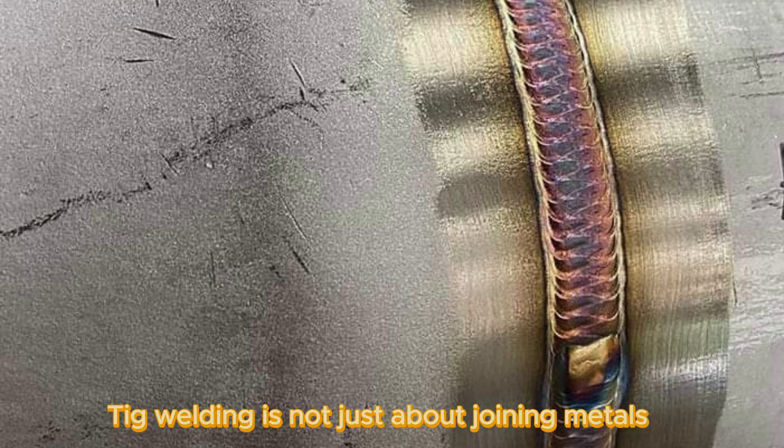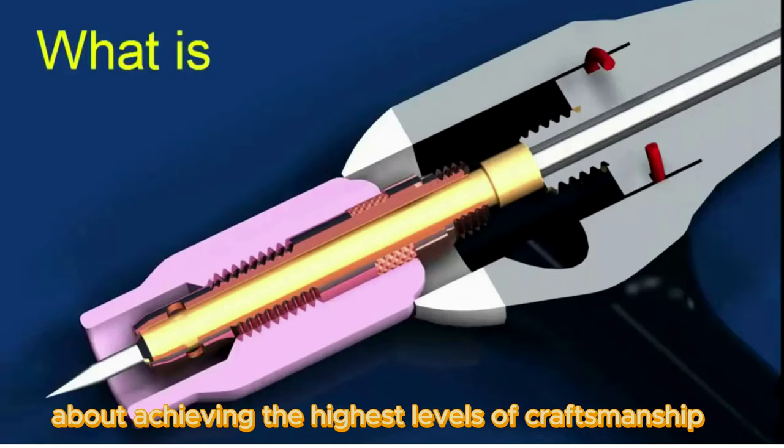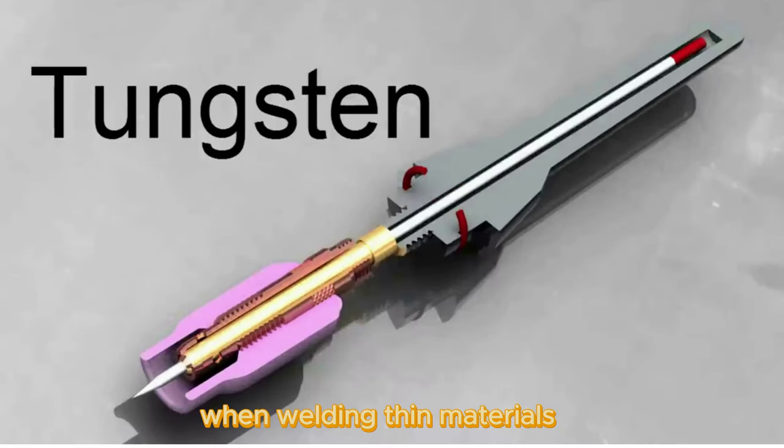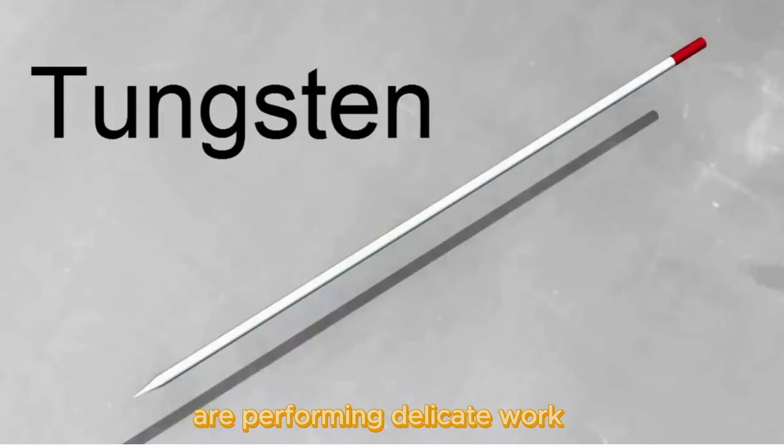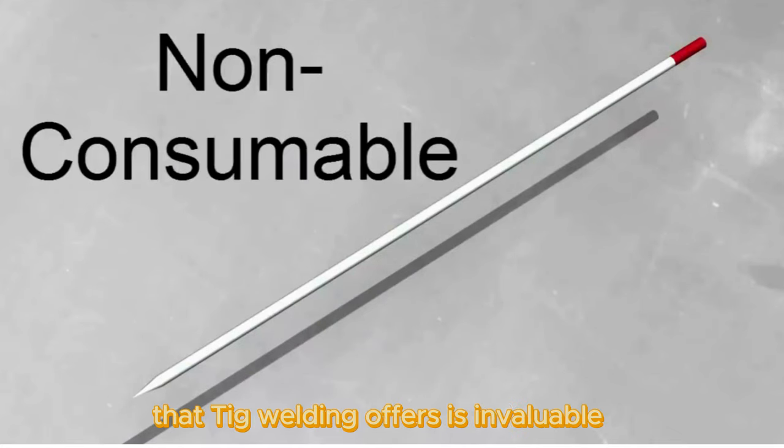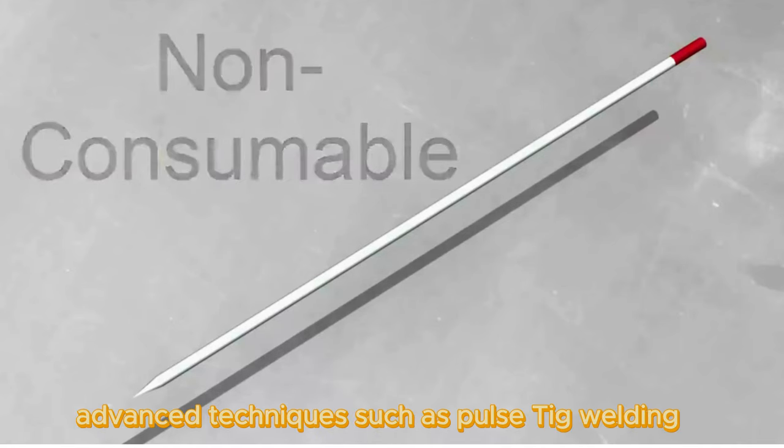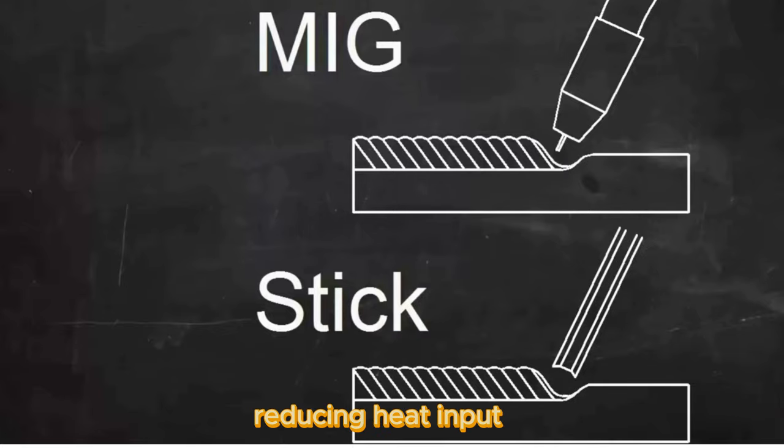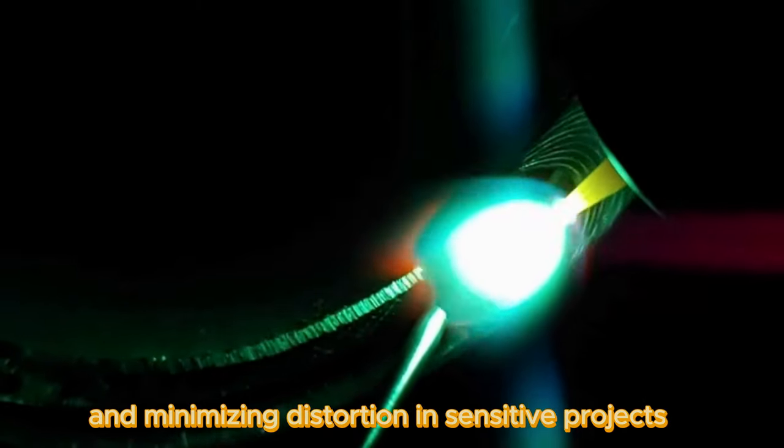TIG welding is not just about joining metals, it's also about achieving the highest levels of craftsmanship and precision. For instance, when welding thin materials or performing delicate work, the precise control over heat and filler material that TIG welding offers is invaluable. Additionally, advanced techniques such as pulsed TIG welding can further enhance control, reducing heat input and minimizing distortion in sensitive projects.